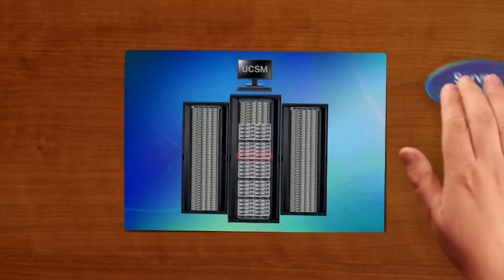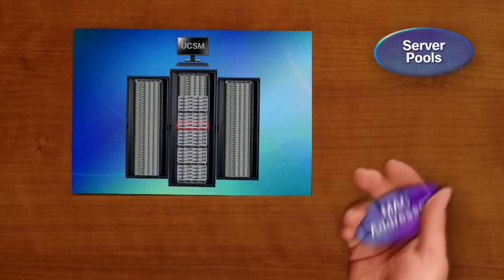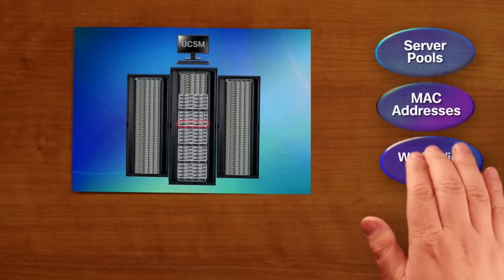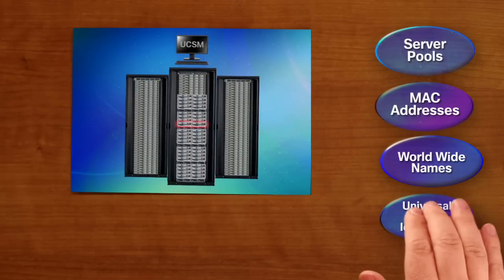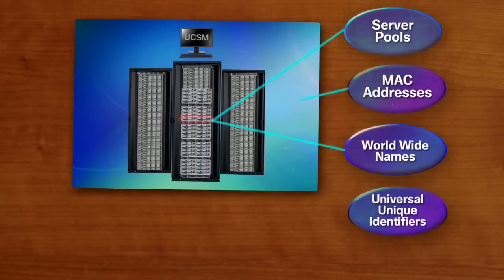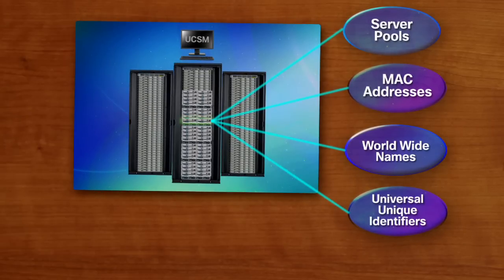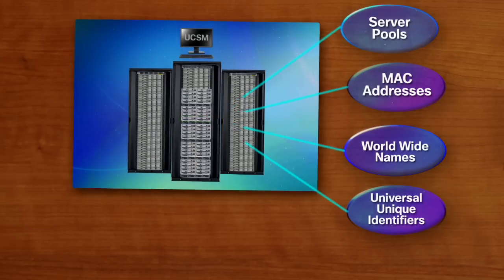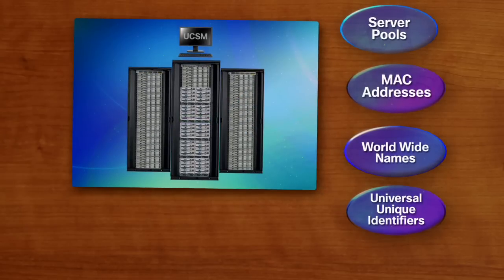Instead, with UCS, we have the concept of resource pools. Resource pools contain MAC addresses and other identifiers that are no longer tied to any specific hardware and can be applied to any server. If you need to replace a server, the system can easily move the same properties to the new hardware, and you don't have to change your infrastructure. We call the collection of policies, resources, and connectivity applied to a server a service profile.